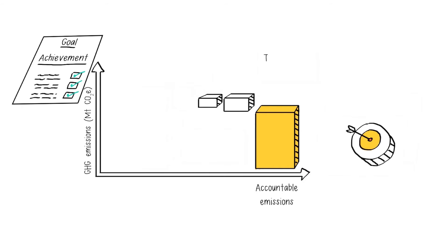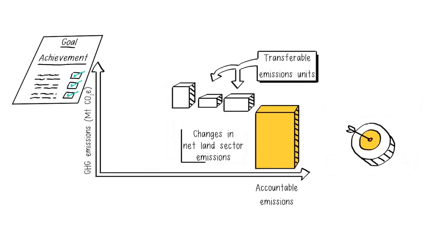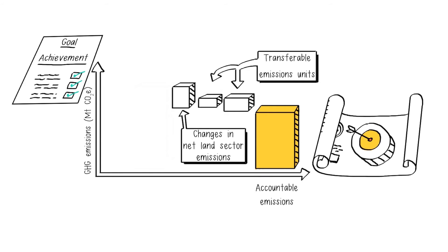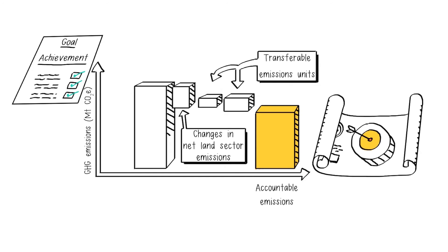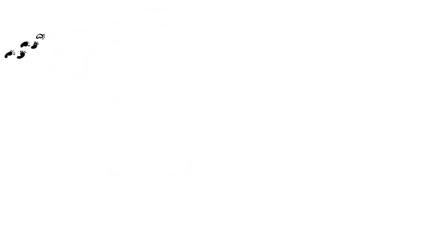This must include any transferable emissions units and changes in net land sector, all depending on the goal design. The accountable emissions is determined by taking into consideration the emissions within the goal boundary in the target year or period, including or excluding the land sector depending on its treatment, and the sale and retirement of transferable emissions units.